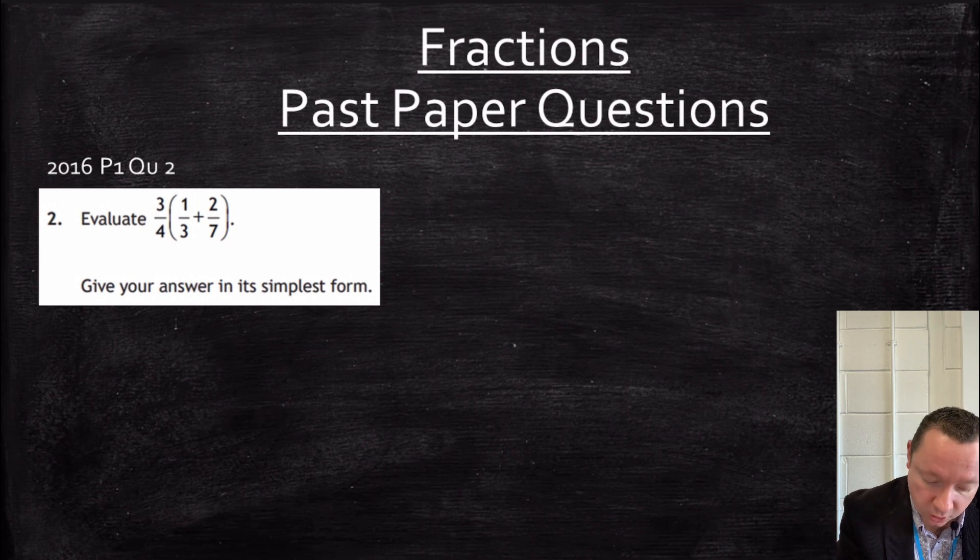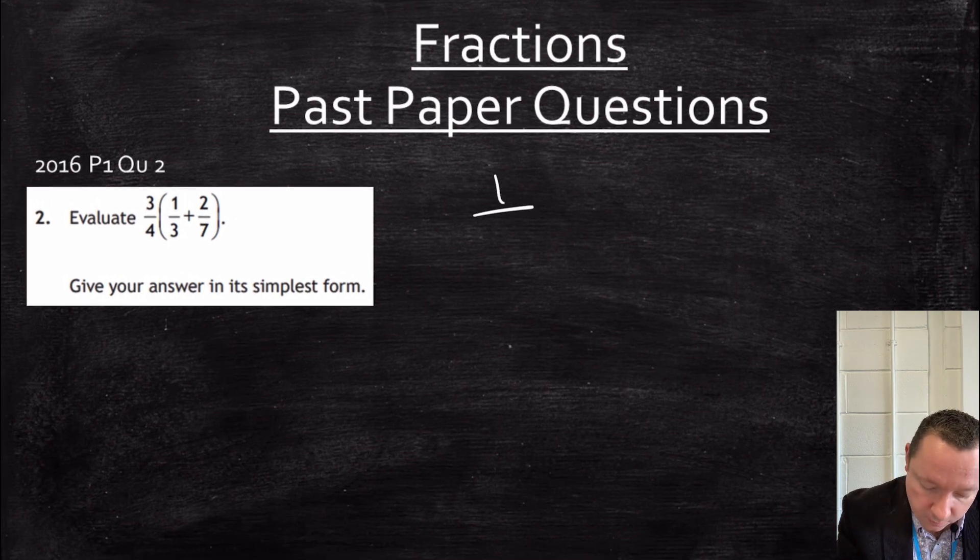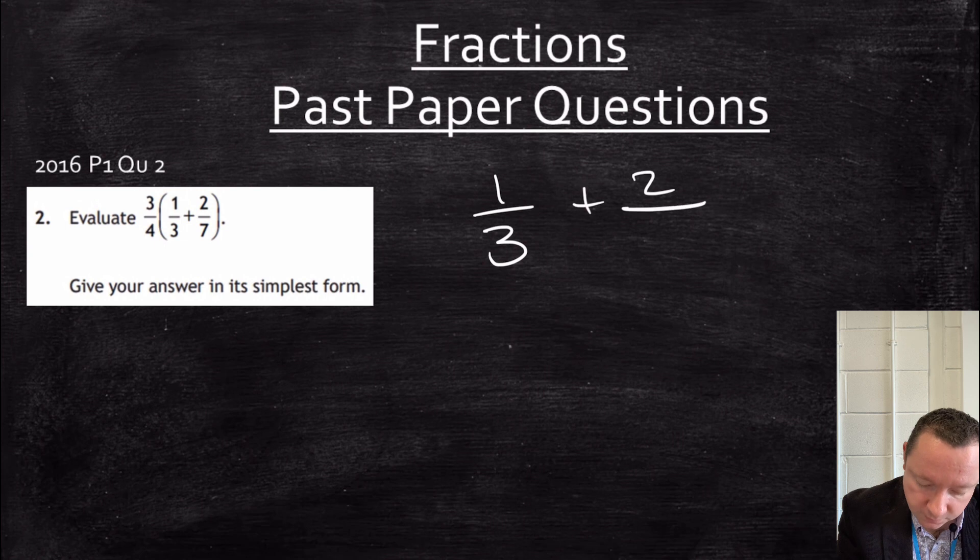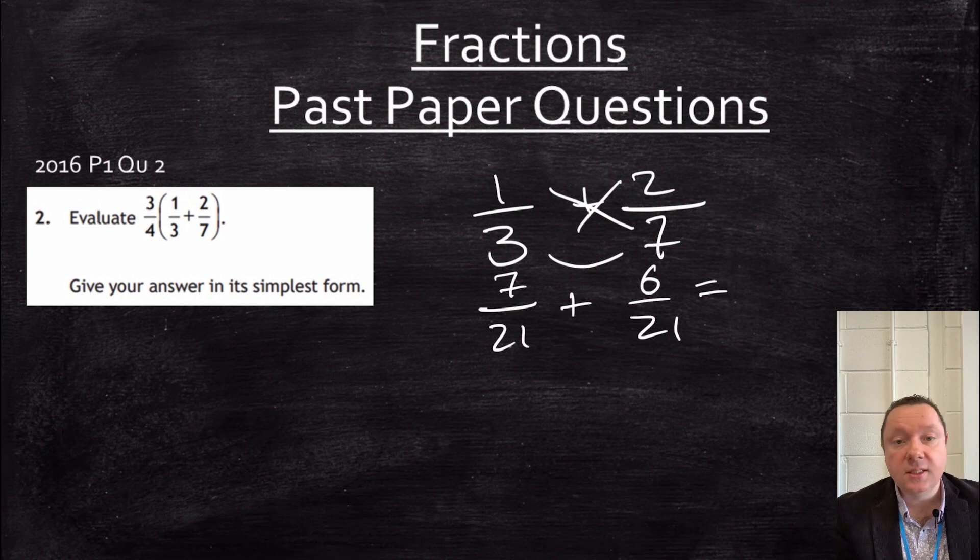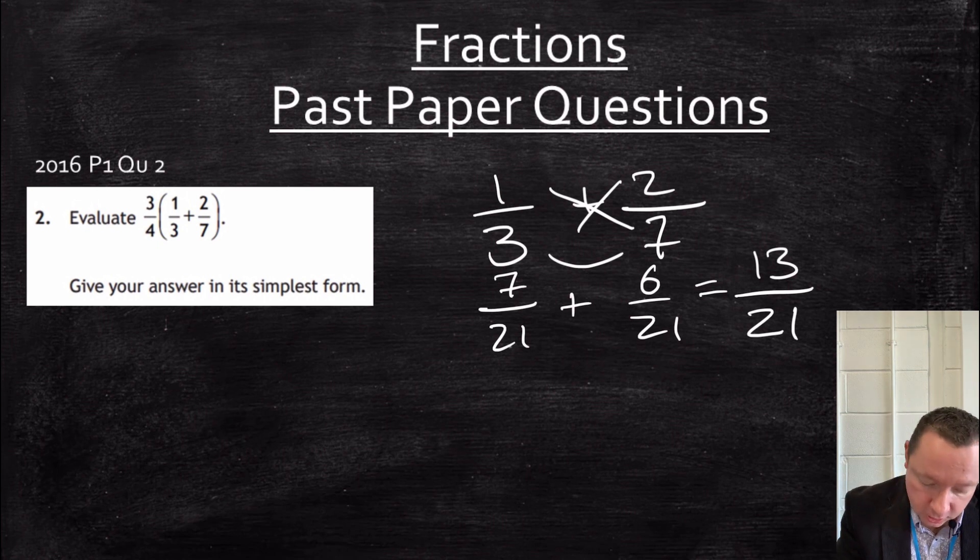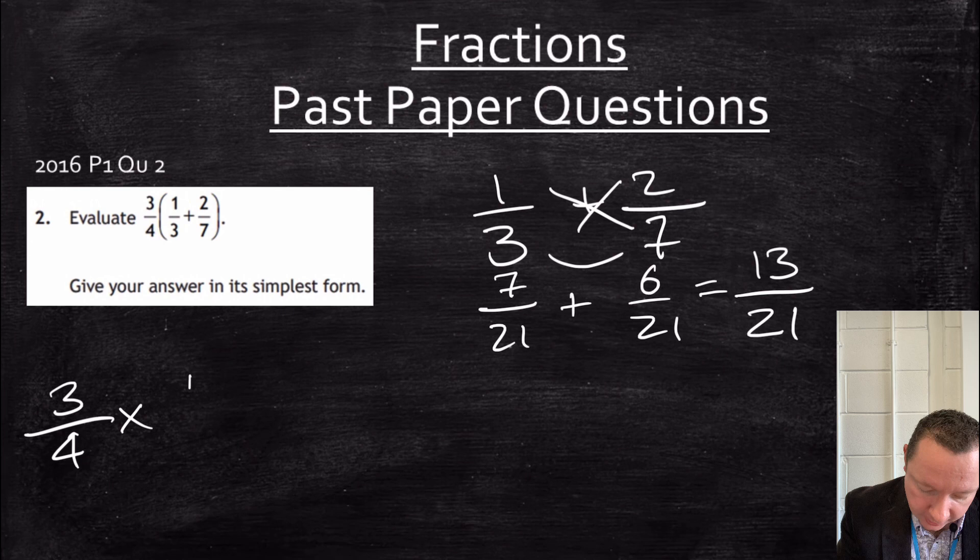Plus two sevenths. Common denominator is 21. Three times seven. One times seven is seven. Plus two times three is six. Seven plus six is 13. So we get 13 out of 21. We've got three quarters times the answer. We've just got 13 out of 21.